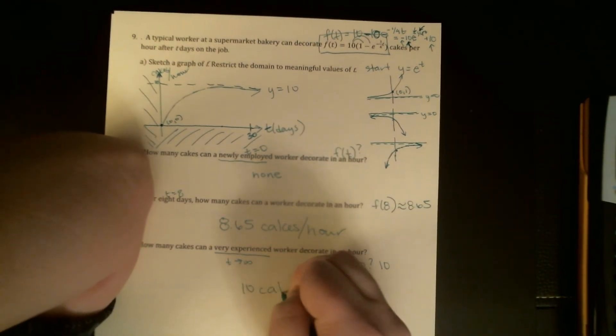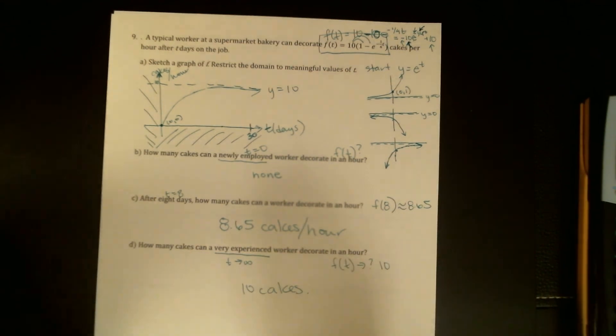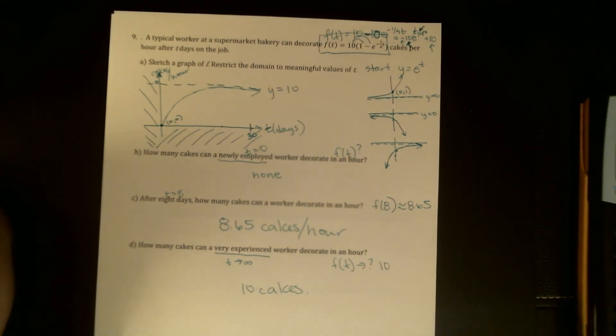10 cakes. And I don't actually need any info here about the fact that you won't quite get to 10 cakes. Because again, I would say if we're talking about cakes, that 9.99999 cakes means 10 cakes to anybody who's working at a bakery. All right, thanks for watching.